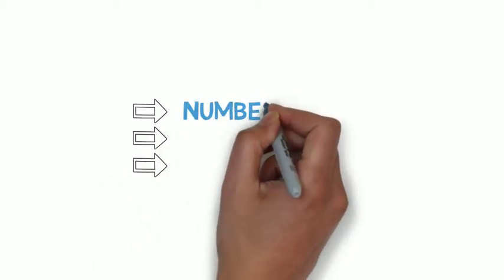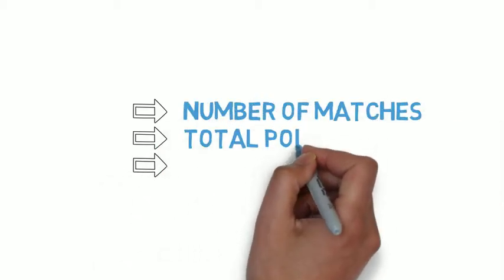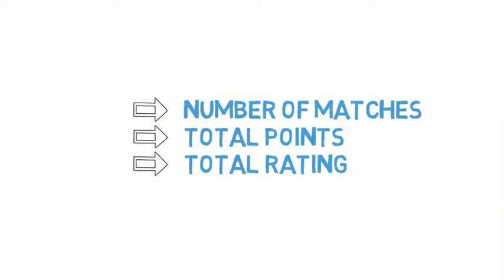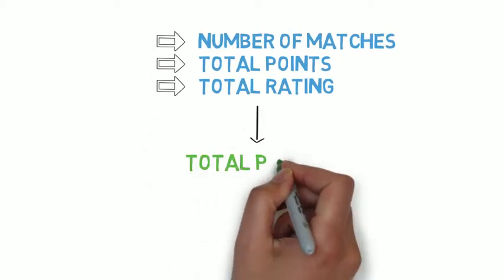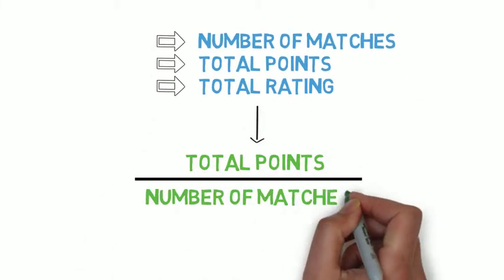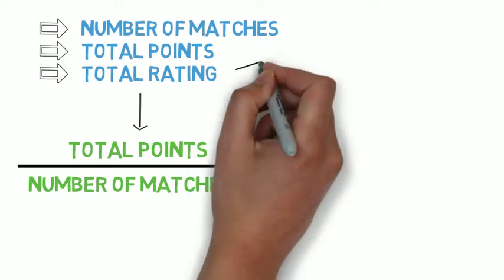To calculate any team's rank, we need 3 things: the number of matches played, total points earned, and the total rating. This total rating is calculated by dividing the points by the number of matches any team has played. The higher the rating, the higher the team's rank will be.